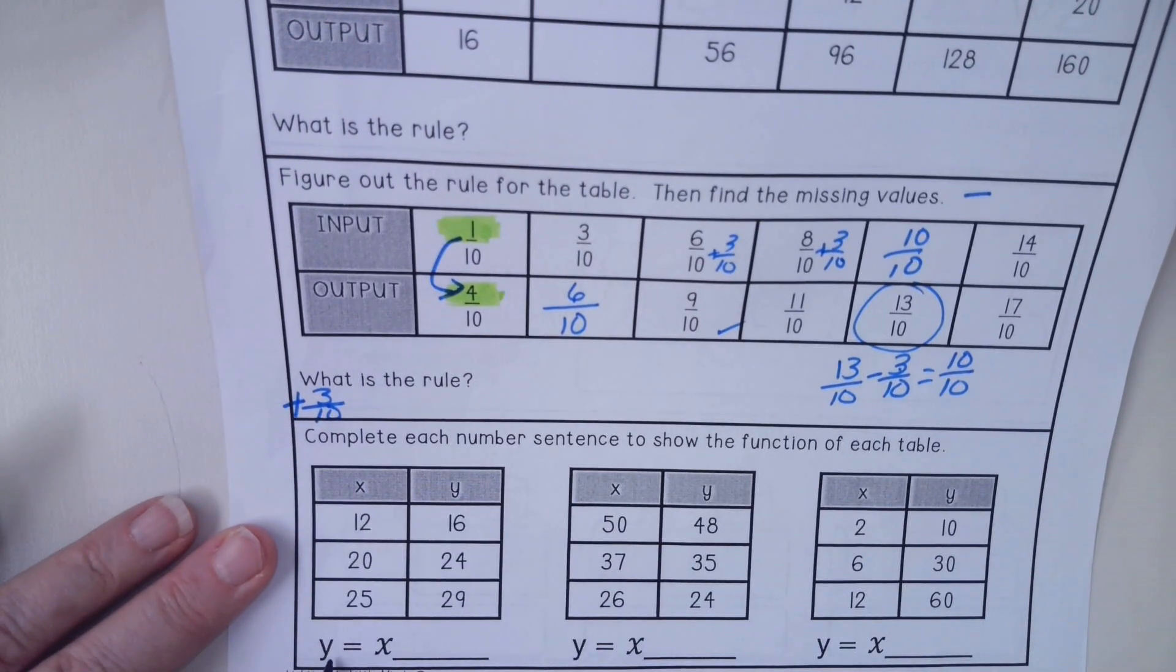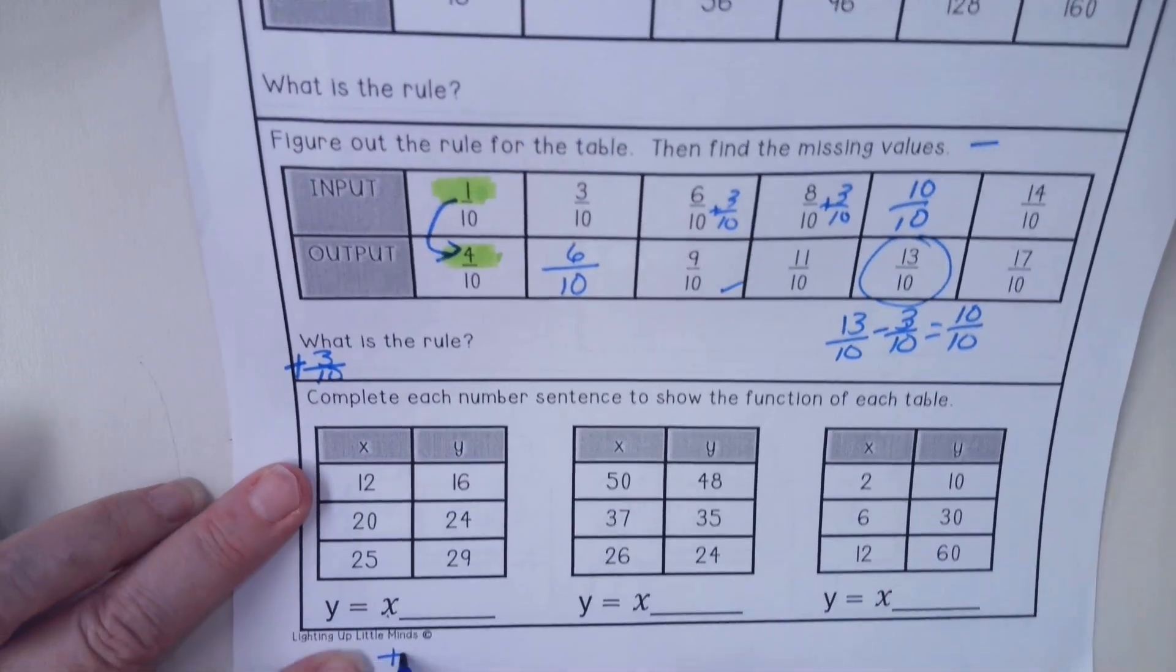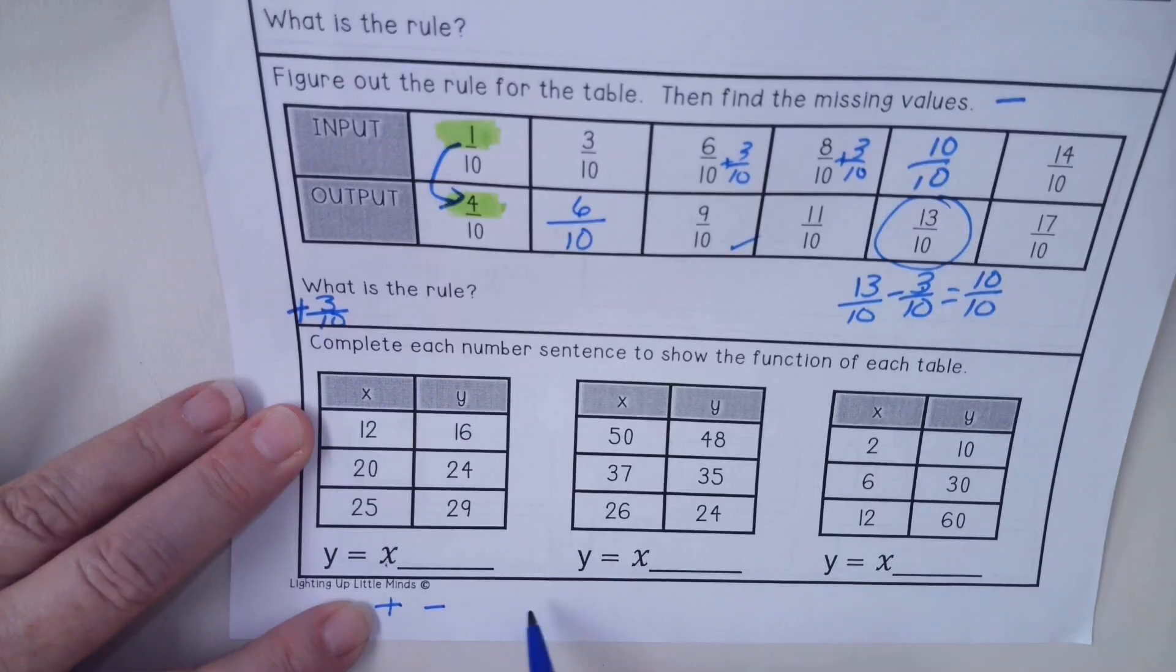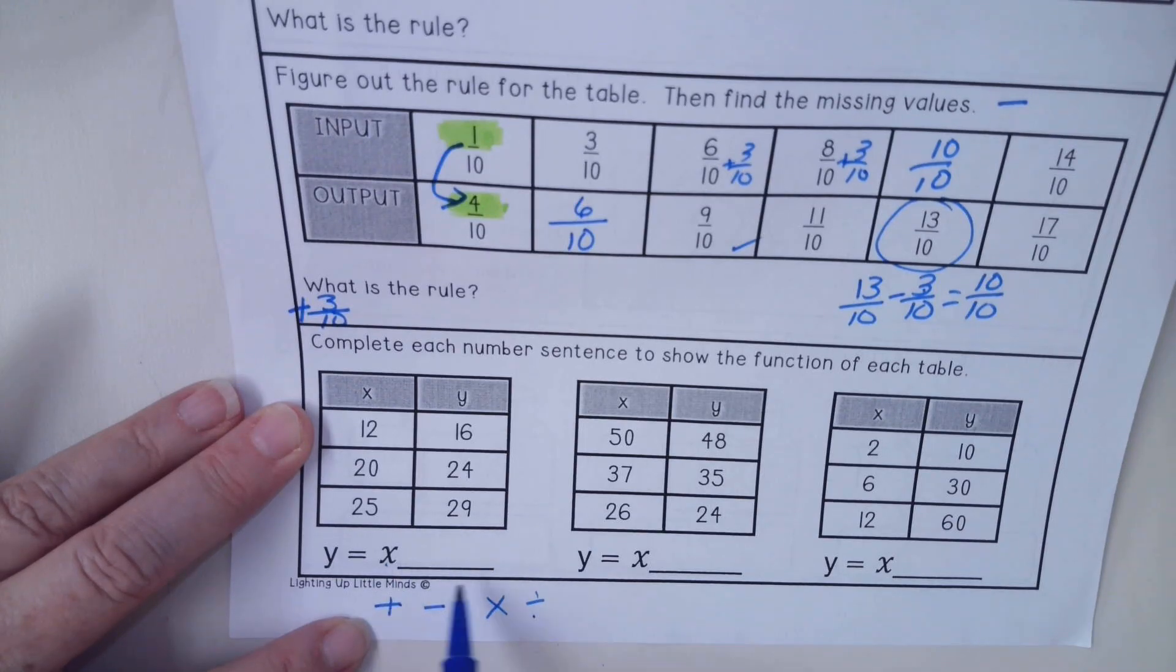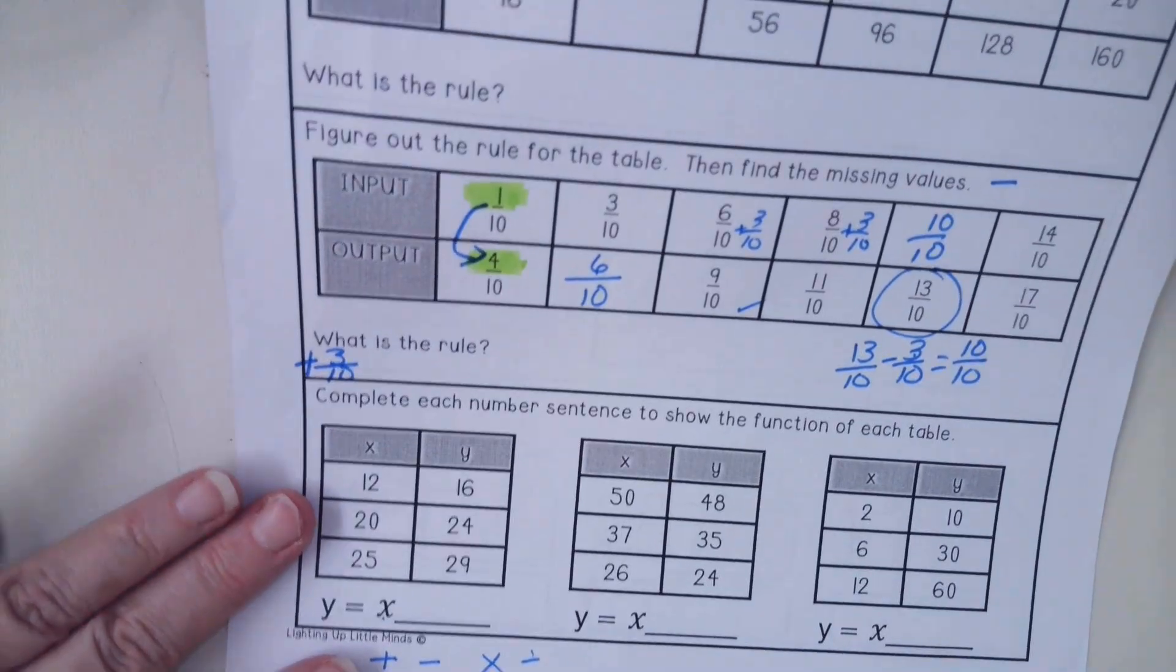On the bottom here, you are going to be working on x is equal to x. And you have to write plus minus multiplication or division. So you're going to think about plus minus multiplication or division and figure out what this rule is. x plus something or x multiplied by something gets us the other number. Good luck with homework. See you tomorrow.